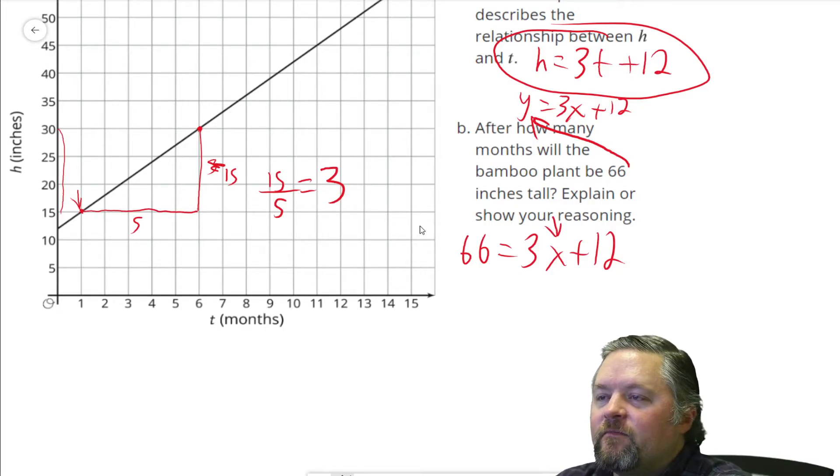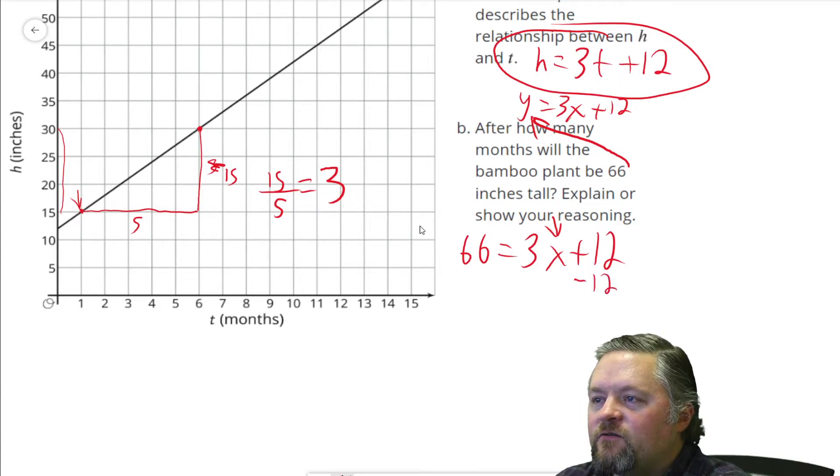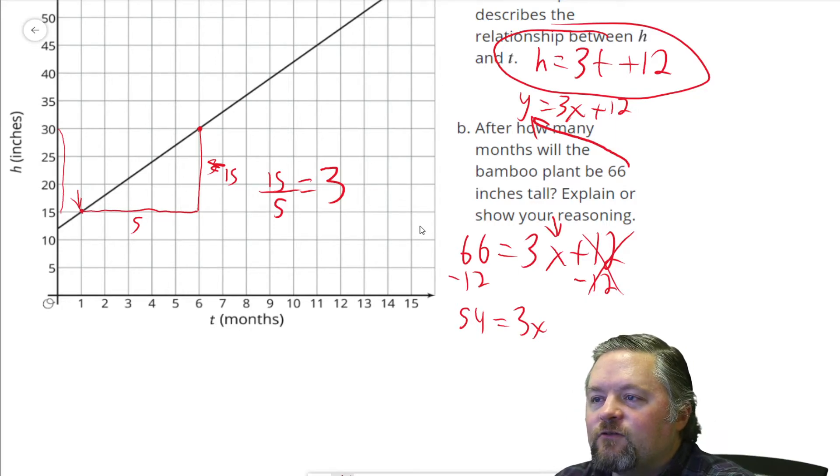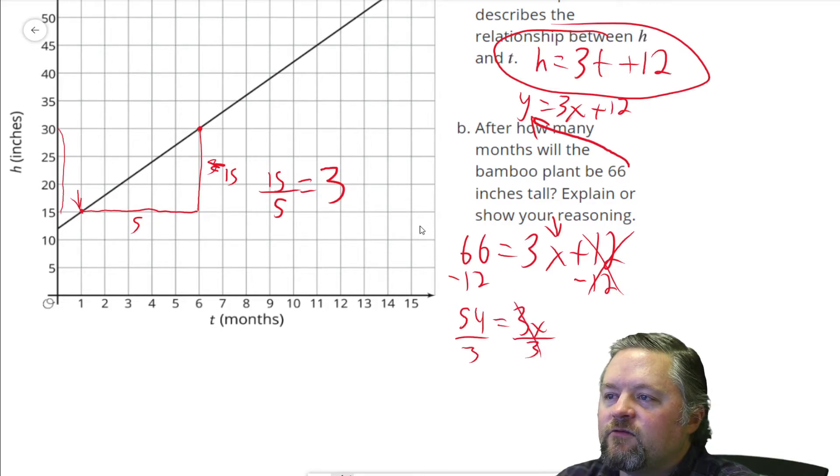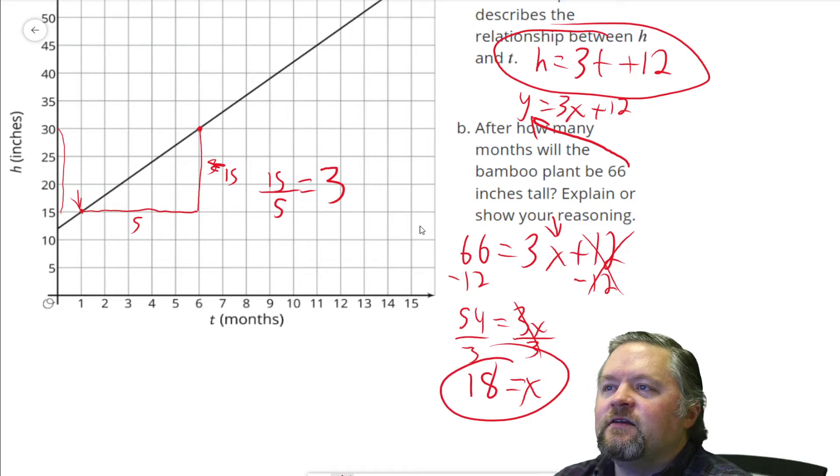Isolate the x, get that x all by itself. How do we do that? Well we got to get rid of anything that's hanging out on the same side of the equal sign. This 12 over here we don't want. How do we get rid of adding 12? We just subtract 12. Do it to one side, do it to the other side. 66 subtract 12 is 54 equals 3x, because we didn't do anything to the 3x. Plus 12 minus 12, those canceled each other out, so we're just left with 54 equals 3x. Now what's stopping the x from being by itself? We got to get rid of that 3. How do we get rid of a 3? Well that 3 is being multiplied. To undo multiplication we divide. 3 divided by 3 cancelled, we're left with x equals whatever 54 divided by 3 is. That is 18, I believe. So x is 18.